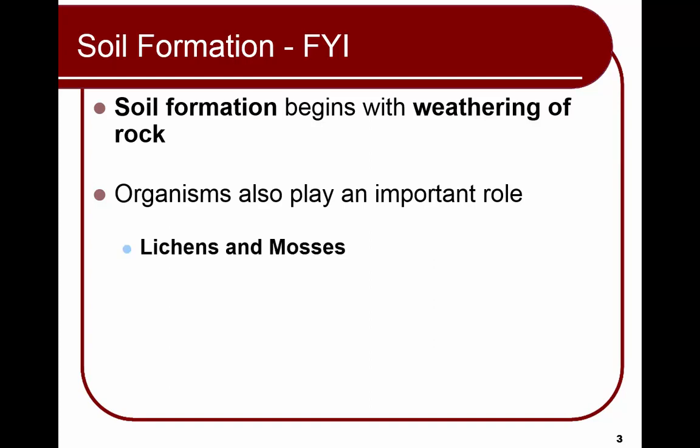Lichens and mosses grow on rocks and trap particles that later allow grasses, herbs, and soil animals to get established. When they die, their remains are decomposed by bacteria and fungi. Humus begins to accumulate, supplying nutrients to the plants — it's simply decaying organic matter.